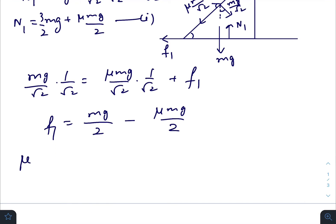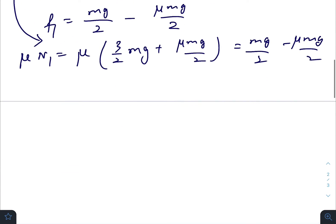This will be our maximum friction, so μ times N1, which is μ(3mg/2 + μ mg)/2. Setting this equal to mg/2 - μ mg/2, all the mg gets cancelled out, all the 2 also gets cancelled out. So we have 3μ + μ² equals 1 - μ, giving μ² + 4μ - 1 equals 0.